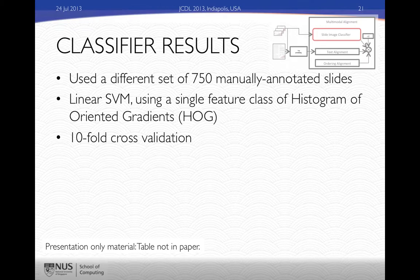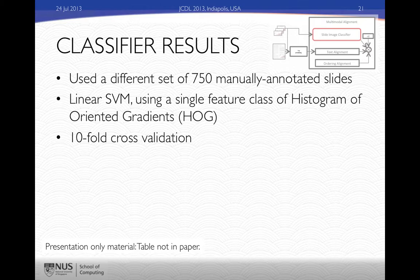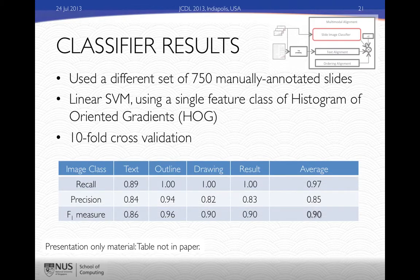We use a single feature class called a histogram of oriented gradients, or HOG, which is a well-known set of features used in computer vision. We use a different set of 750 manually annotated slides — different from the dataset discussed earlier — to train and test our classifier using tenfold cross-validation. Using this single feature class, we achieve an F-measure of about 0.9, meaning that one out of every ten slides may fall into the wrong category. We think this represents a fairly useful result because the classifier is largely accurate.